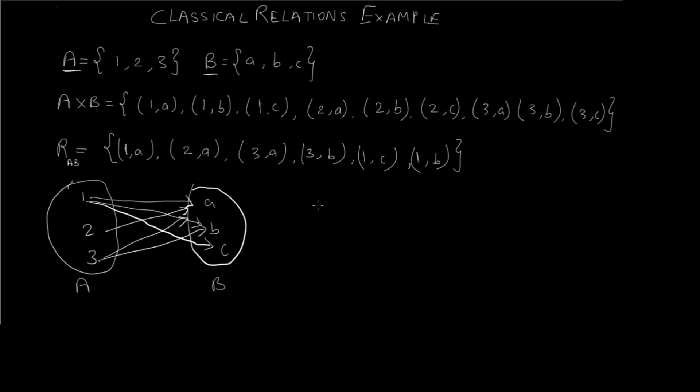And we can also denote this relation in terms of a 2D matrix. The way we do it is R is equal to - the rows are denoted by the first elements' values so it would be 1,2 and 3, and the columns are denoted by a,b and c. So you can see it's a 3×3 matrix.